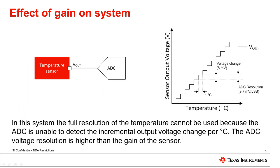This will result in the system having uncertainty of what the temperature is due to the ADC voltage resolution being higher than the gain of the sensor. Now the question is, how can this be fixed?